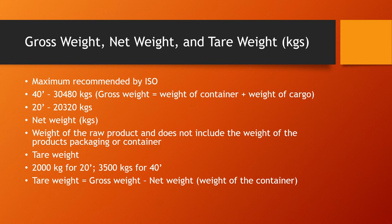The weight is given as per the maximum recommended by the ISO. For 40-foot containers, the gross weight is normally around 30,480 kilograms, though it's not exactly the same for every container since gross weight equals the weight of the container plus the cargo. For 20-foot containers, it's typically in the range of 20,000 kilograms. The net weight is the weight of the raw product and does not include packaging or the container. The tare weight equals gross weight minus net weight — essentially the weight of the container itself.